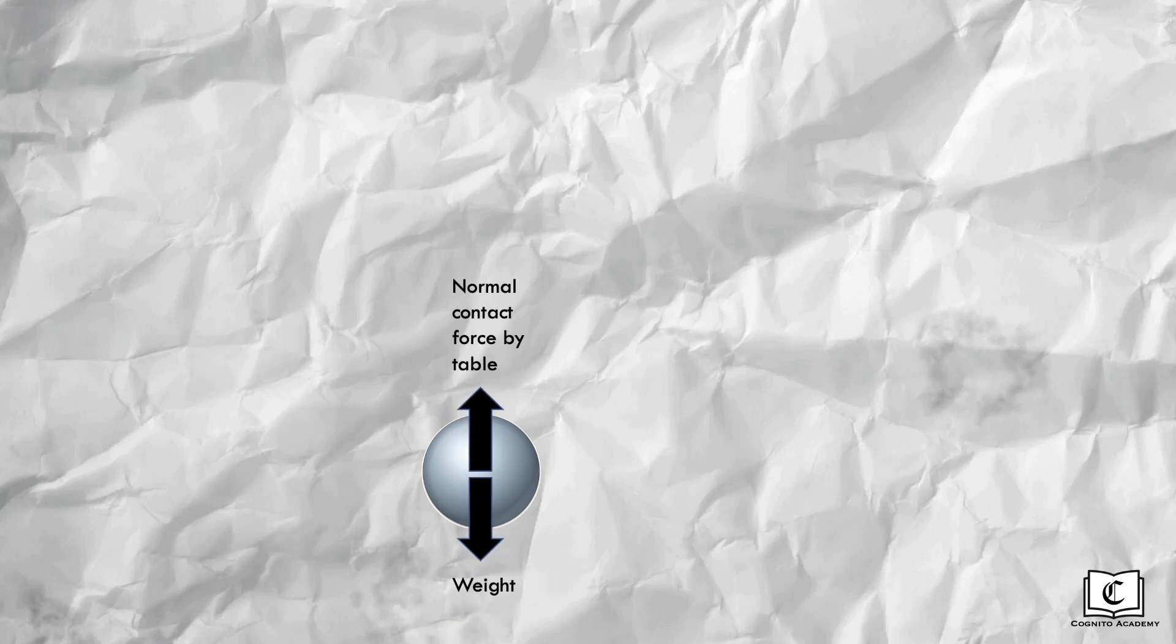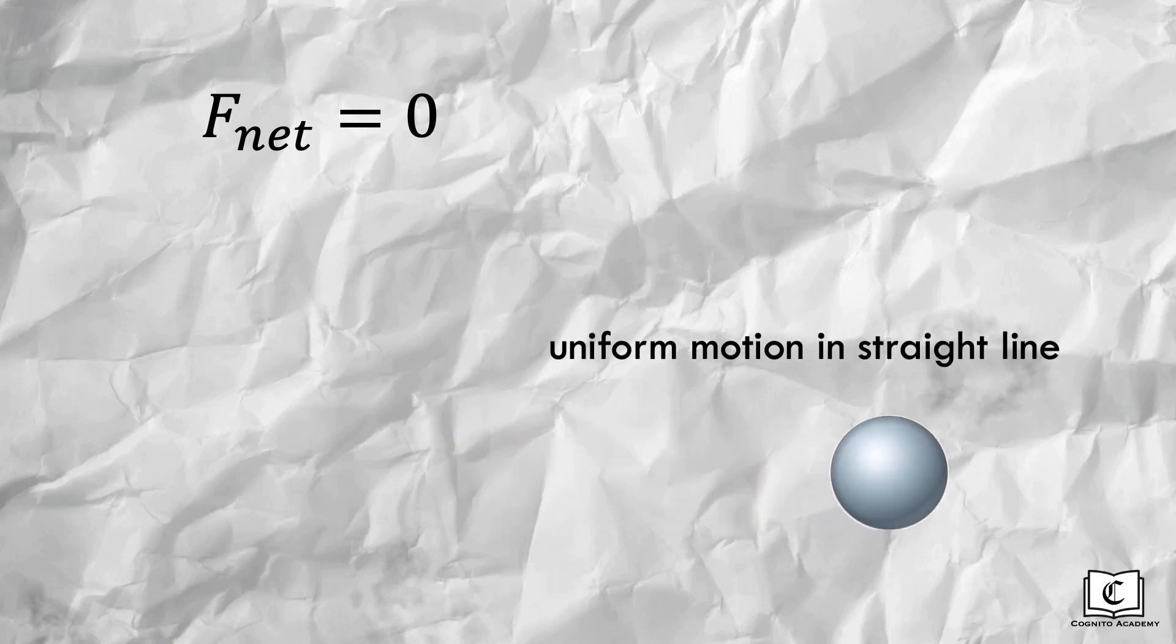There are two forces acting on the ball, its weight and the normal contact force on the ball by the table. These two forces are equal in magnitude, hence they cancel each other out. Hence, resultant force acting on the ball is zero and the ball will continue its uniform motion in a straight line.